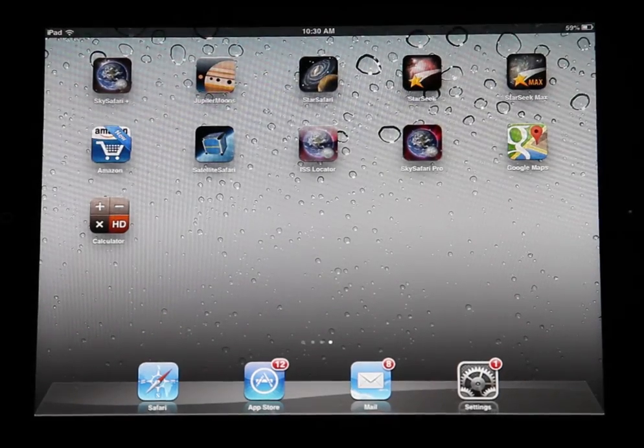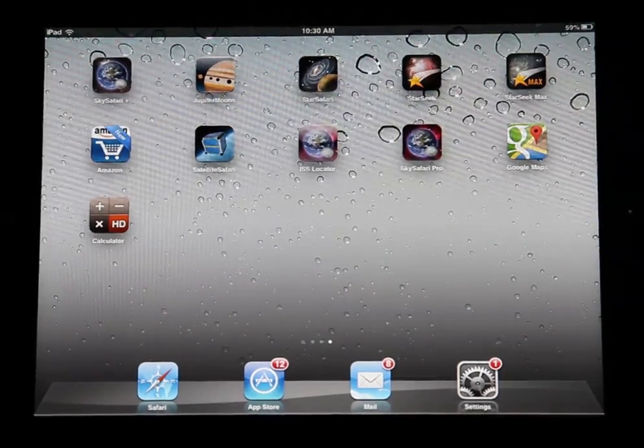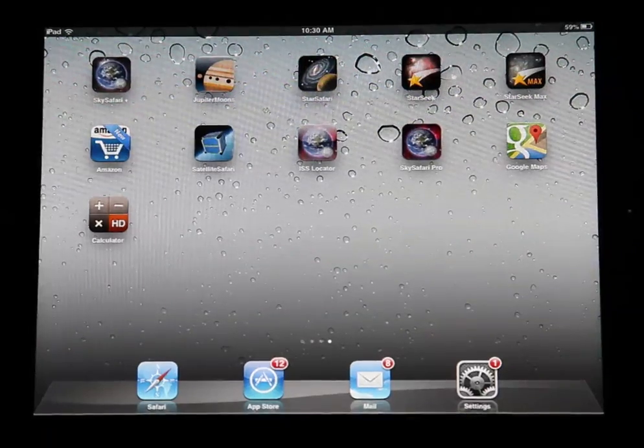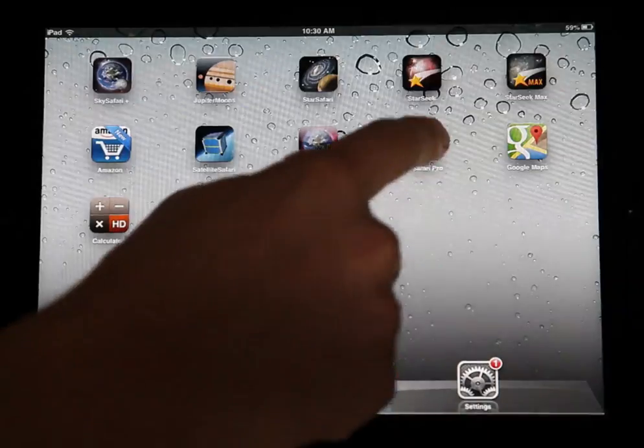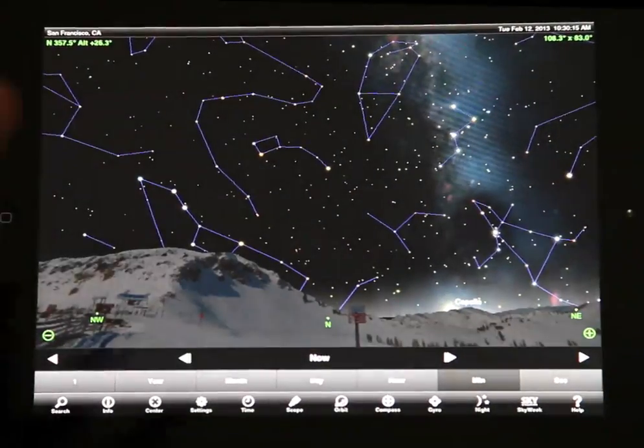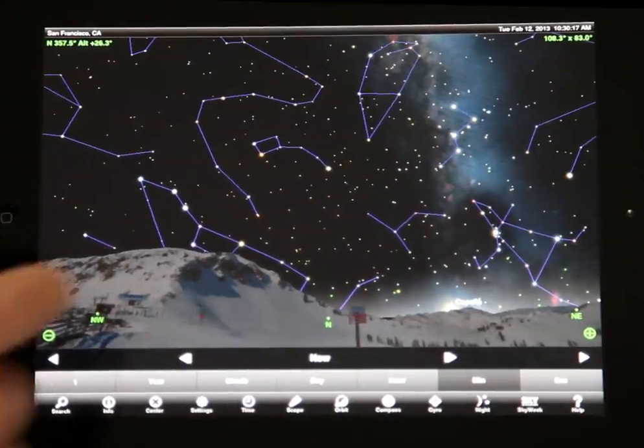I know SkySafari Pro is awesome about showing satellites and planets and so forth, but there's a lot of buzz now about asteroids, and I hear you guys have some improvements. Can you show me what you got? Sure. So we have SkySafari Pro here, and I'm just going to launch the app as it normally launches.